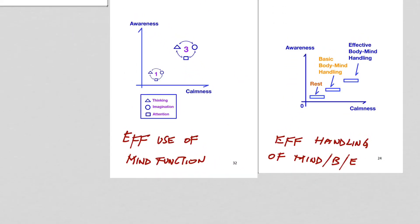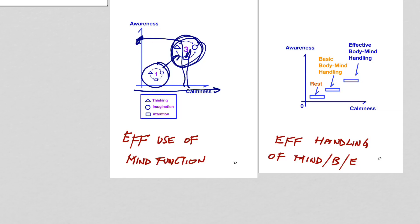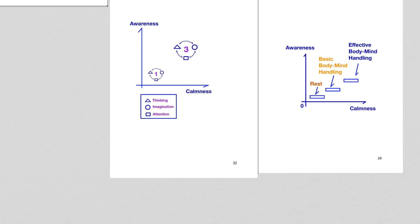So the more one gets into calmness and develops it — and of course when you develop calmness, you develop awareness too — then your handling of thinking, imagination, and attention becomes more effective. When you reach the third level, the trained one will be able to handle this much; the really high skill one will be able to use this much of thinking, imagination, and attention. The one like us who is never trained doesn't even know that this exists.